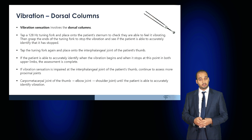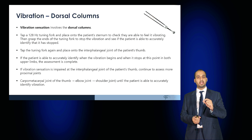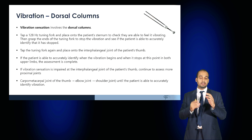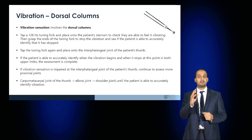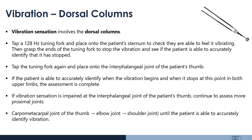Vibration sense involves the dorsal columns. Use a 128 hertz tuning fork, place it on the patient's sternum, and ask if they can appreciate the vibration. It is important to discern the sensation of vibration from temperature. Then tap the tuning fork and place it on the interphalangeal joint of the patient's thumb. If the patient can accurately identify the vibration and when you stop it, with eyes closed, that is a normal vibration sense. If vibration sense is impaired at the interphalangeal joint, move to more proximal joints: the carpometacarpal joint of the thumb, the wrist, the elbow, and the shoulder.